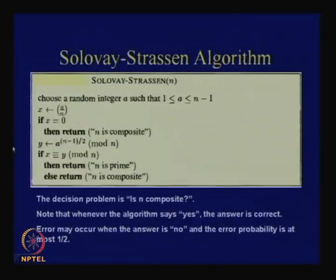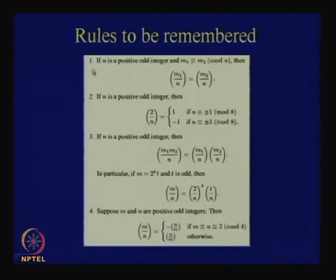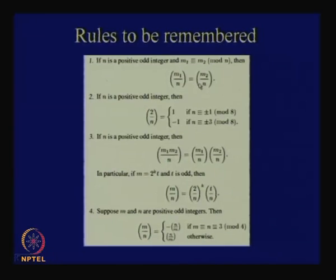We need to compute the Jacobi symbol efficiently. Computing it via factorization of n is hard since factoring is a hard problem itself. But luckily, number theory gives us properties to compute the Jacobi symbol without factoring n. The proofs for the Jacobi symbol properties follow from the corresponding Legendre symbol results.